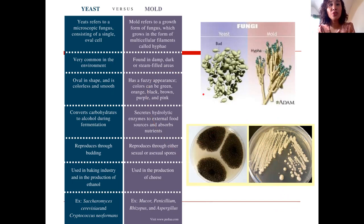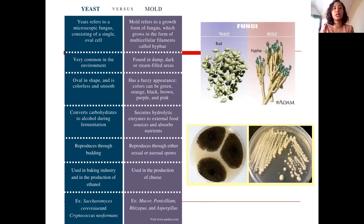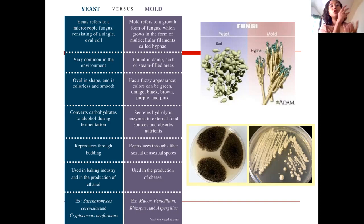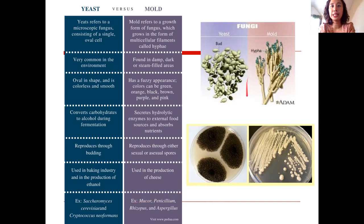Some fungi are only yeast forever, like Candida albicans and Saccharomyces cerevisiae used in brewery for beers. However, some are both — they can be in yeast form or mold form. These are called dimorphic fungi. They are in yeast form at 37 degrees Celsius, such as in our body, and in mold form at around 25 degrees Celsius at room temperature.